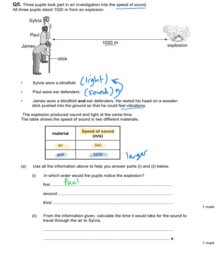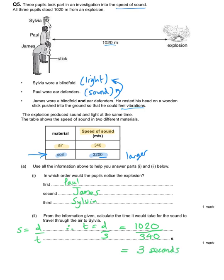James would notice the explosion second — he is detecting vibrations through the soil, which travels approximately 10 times faster than through the air. Sylvia would notice it last, relying on vibrations in the air. To calculate the time for sound to travel through the air to Sylvia: speed = distance ÷ time, so time = distance ÷ speed. The distance is 1020 metres and the speed of sound in air is 340 m/s, giving 1020 ÷ 340 = 3 seconds.